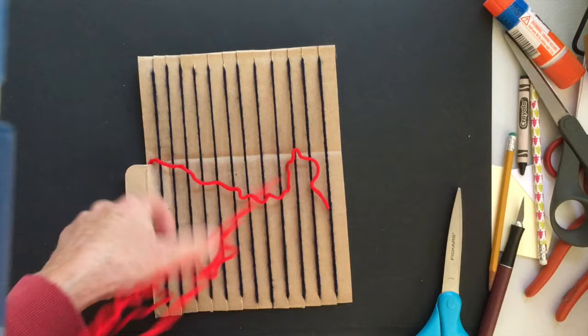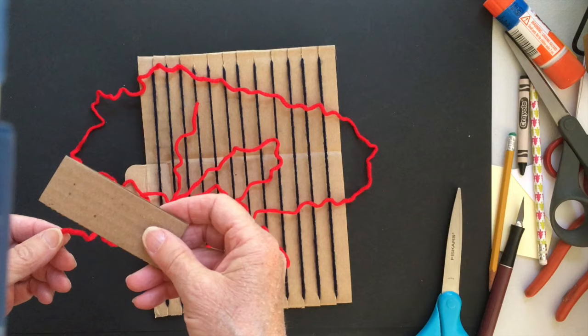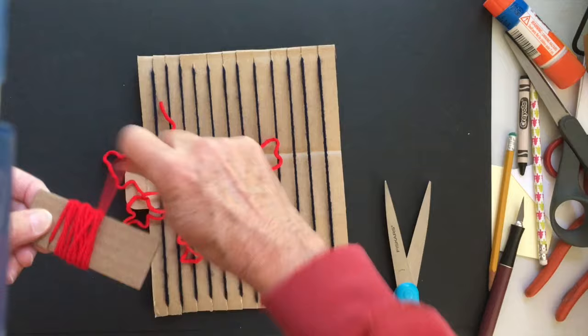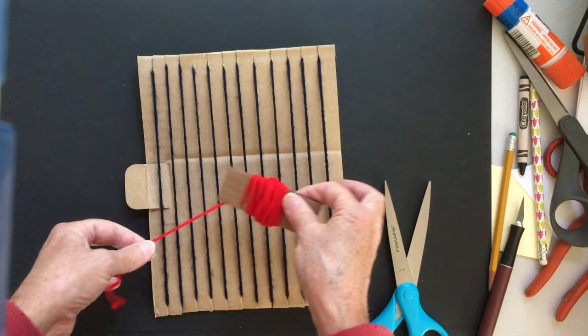I'm going to tie these two ends together with the square knot or sometimes I tie a little bow. Now I'm ready to start weaving. I can take a hunk of yarn. It's a little messy like this so sometimes I grab a little piece of cardboard. I cut a notch in it and then I stuff my yarn in that notch and I start to wrap and that makes it easier to work with.